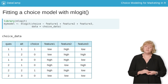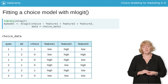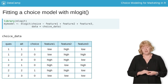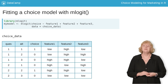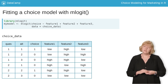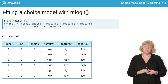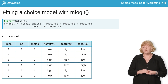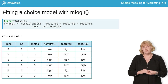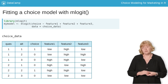The process for fitting a choice model is very similar to fitting a linear regression model, except that we use a different function called mLogit. Multinomial logit models are somewhat specialized, so you can't estimate them with lm or even with the GLM function that you may have used before. Instead, we use the mLogit function from the mLogit package.